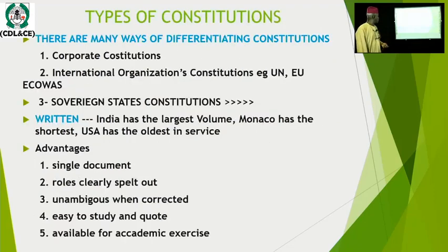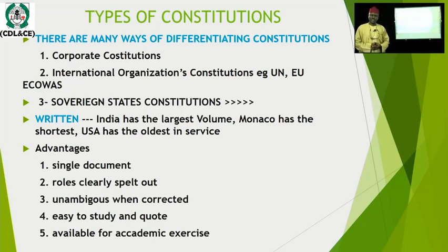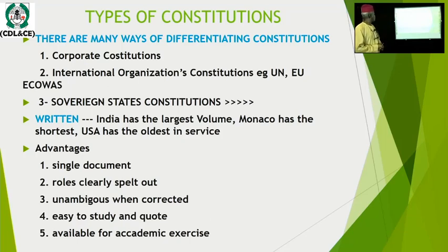So, constitutions have existed in human society across different eras, epochs, and civilizations. Since every society has different modes and systems of governance and relationships, we do not expect constitutions to be just one. Even God sent many books. So the human society, as dynamic as it is, would not be under one code over its entire history. What types of constitutions do we know or can we find out?